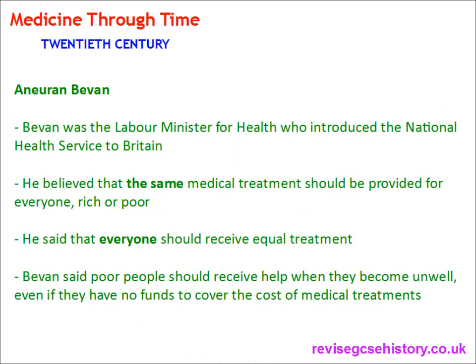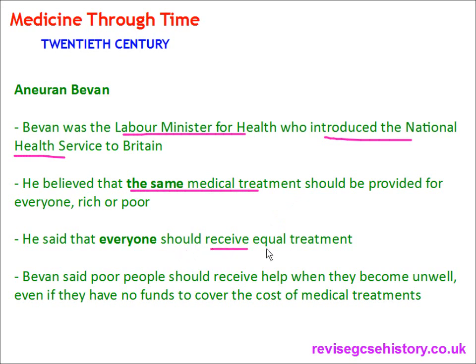Bevan was the Labour Minister for Health who introduced the National Health Service. He believed that the same medical treatment should be provided for everyone, rich or poor. He said that everyone should receive equal treatment, and that poor people should receive help when they become unwell even if they have no funds to cover the cost — the same medical treatment as if they were very rich individuals.